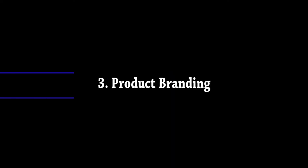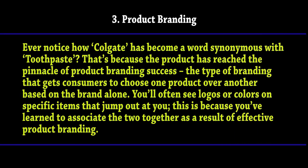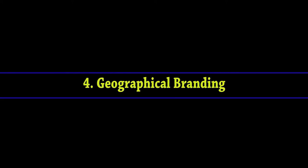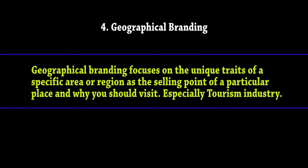The third is product branding. Notice how Colgate has become synonymous with toothpaste — that's because it has reached the pinnacle of product branding success. This type of branding gets consumers to choose one product over another based on the brand alone. You will often see logos and colors on specific items that stand out because you have learned to associate them together as a result of effective product branding. The fourth is geographical branding, which focuses on the unique traits of a specific area or region as a selling point — especially in the tourism industry.